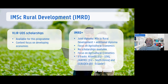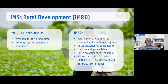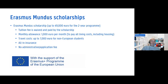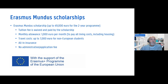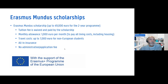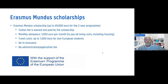The Rural Development program comes with three different tracks: Atlantis, EK3, and Rudev — visit the website for more details. As for the Erasmus Mundus scholarships themselves, they are full-fledged, covering most expenses: tuition fee, a comfortable monthly allowance, travel costs up to €7,000 for non-European students, insurance, and there is no additional application fee charged. This is a great opportunity and we invite you to look into the details and consider applying.